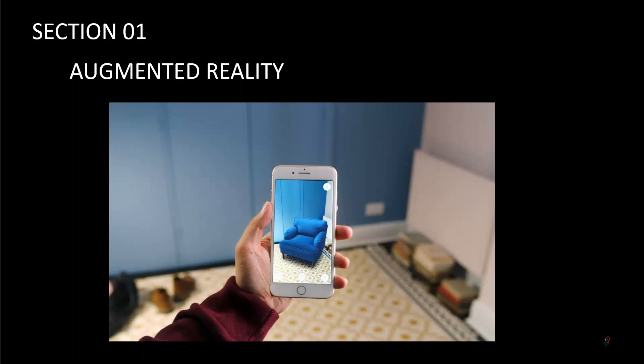Welcome to our second session, in which we are going to understand what augmented reality really means. The technical definition of augmented reality is: it is a technology that superimposes computer-generated images on a user's view of the real world, thus providing a composite view.